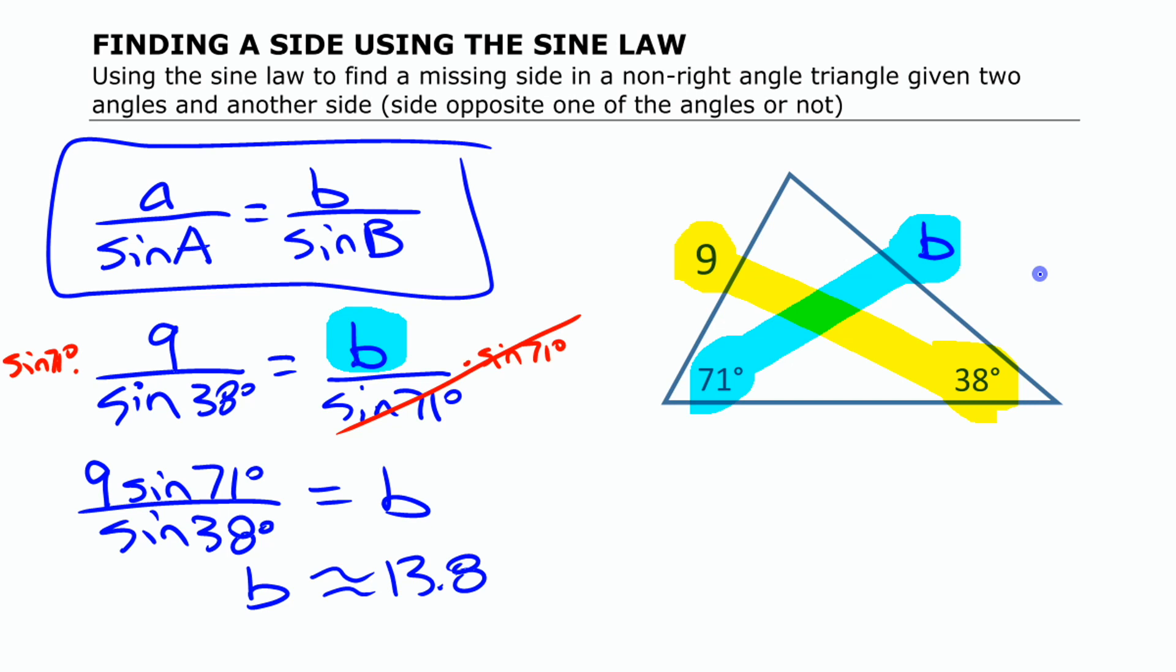Now if you wanted to find the other side length here, you can use the same approach, except that we don't have this angle over here. But it's pretty easy to find that angle because it's a triangle. You know they all add up to 180. So if you look at what the other two are, if you add that up and subtract it from 180, this missing angle over here, which I'm going to call c now because I used a and b for the other ones, angle c is going to be 180 minus 71 minus 38, which is of course 71 degrees.